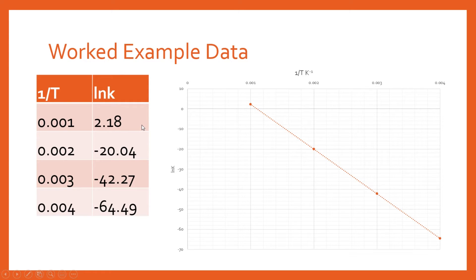To do an Arrhenius plot, all you need to do is on your x-axis have one over your temperature, so your inverse temperature. Make sure it's in Kelvin, so the inverse temperature will be Kelvin to the minus one. On your y-axis, you're going to have the natural logarithm of your rate constant k. When you plot this, you should get a nice straight line. This is going to be very useful for calculating your activation energy and also calculating your intercept.